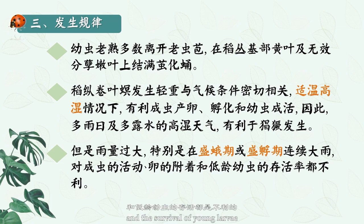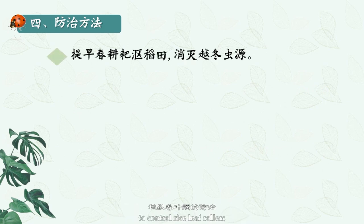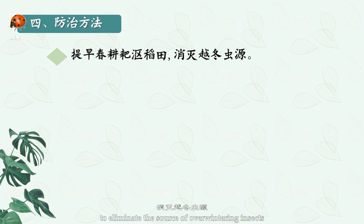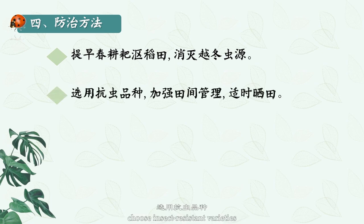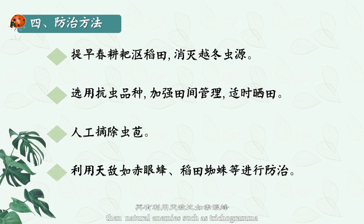To control rice leaf rollers, we should harrow and compost the paddy fields early in spring to eliminate the source of overwintering insects, choose insect-resistant varieties, strengthen field management, and dry the fields at the right time. You can also manually remove the insect bracts.